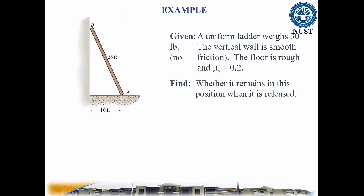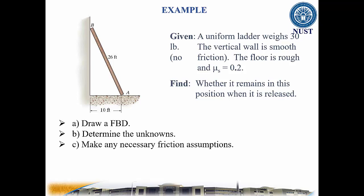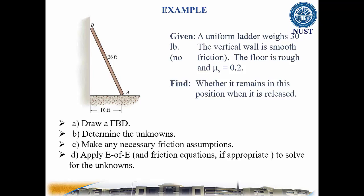Consider this example. A uniform ladder weighs 30 pounds, the vertical wall is smooth — meaning no friction exists — the floor is rough, and mu equals 0.2. We need to find whether it remains in this position when it is released. Our plan is to draw a free body diagram, determine the unknowns, make any necessary friction assumptions, apply equations of equilibrium and frictional equations to solve for unknowns, and check assumptions if required.